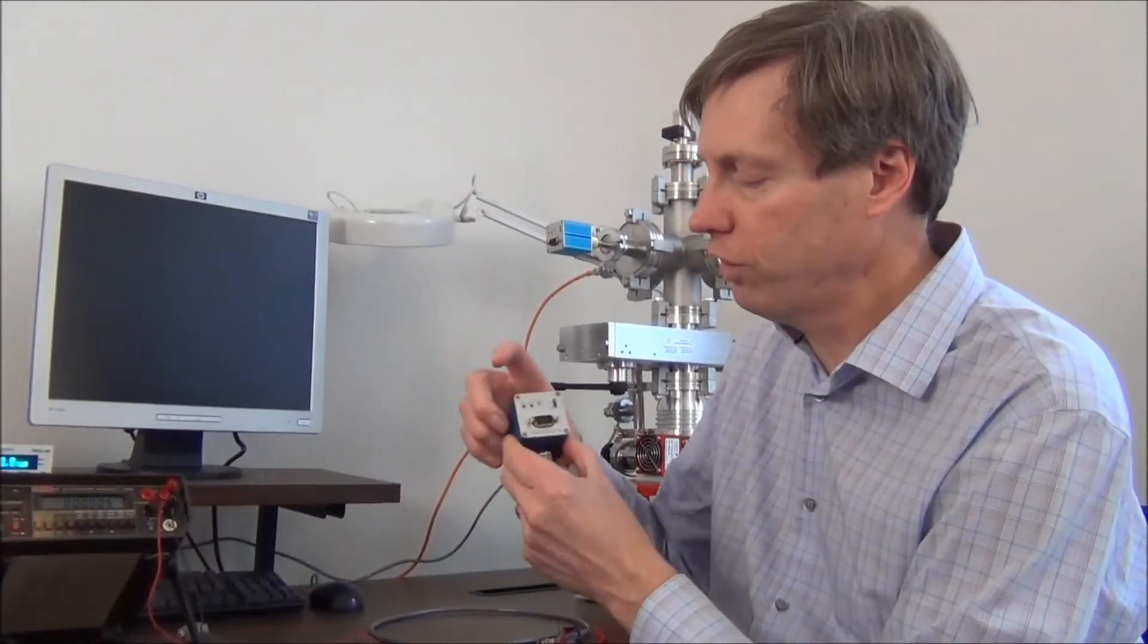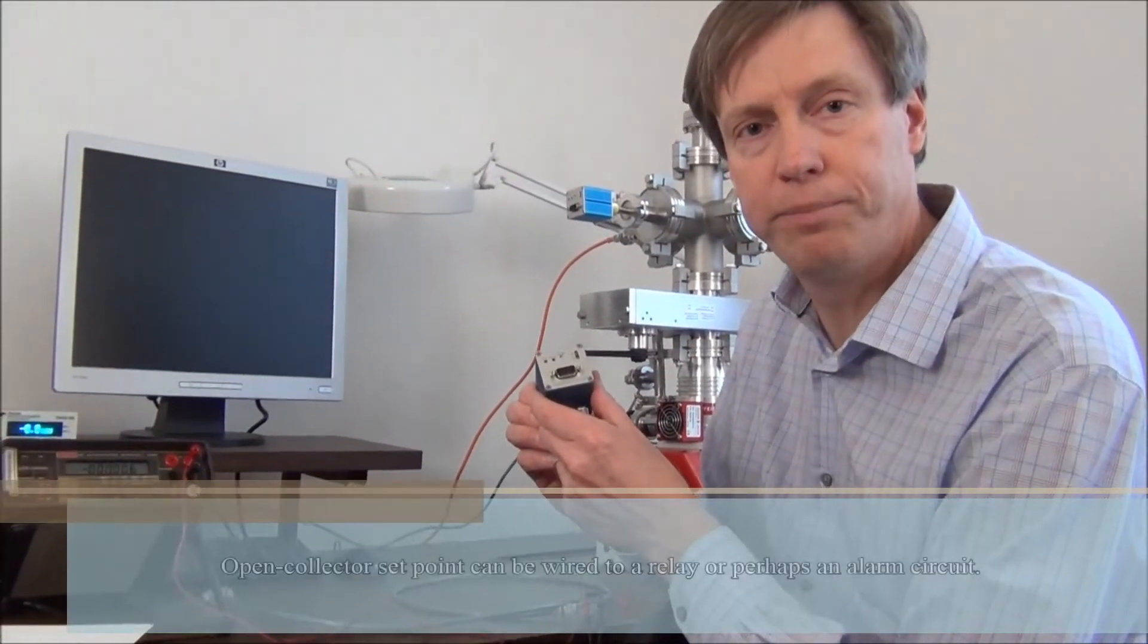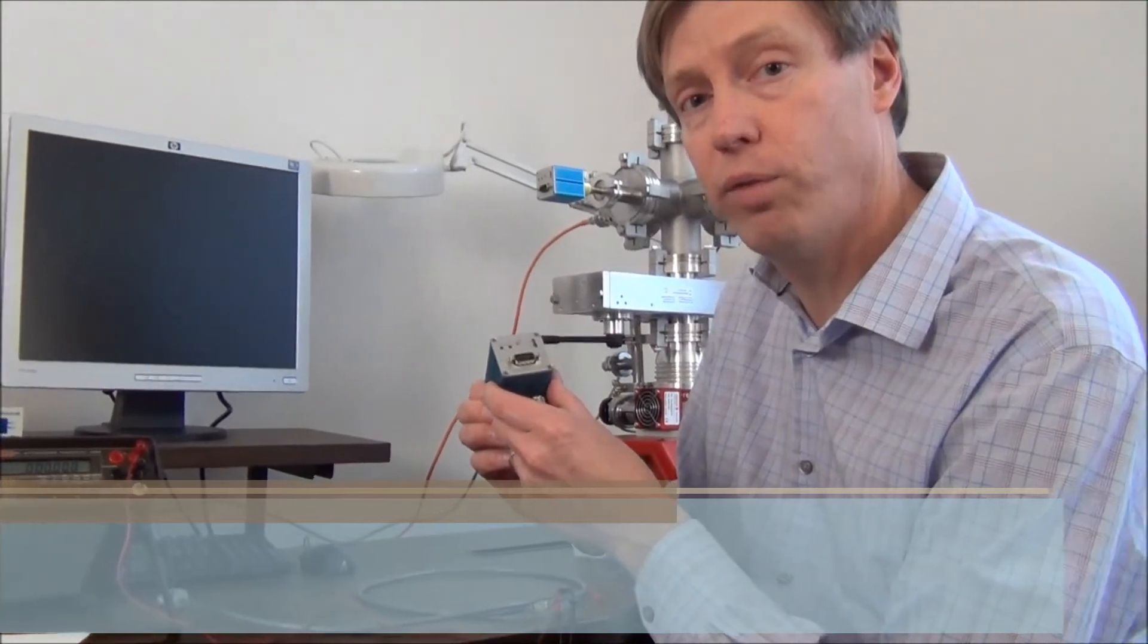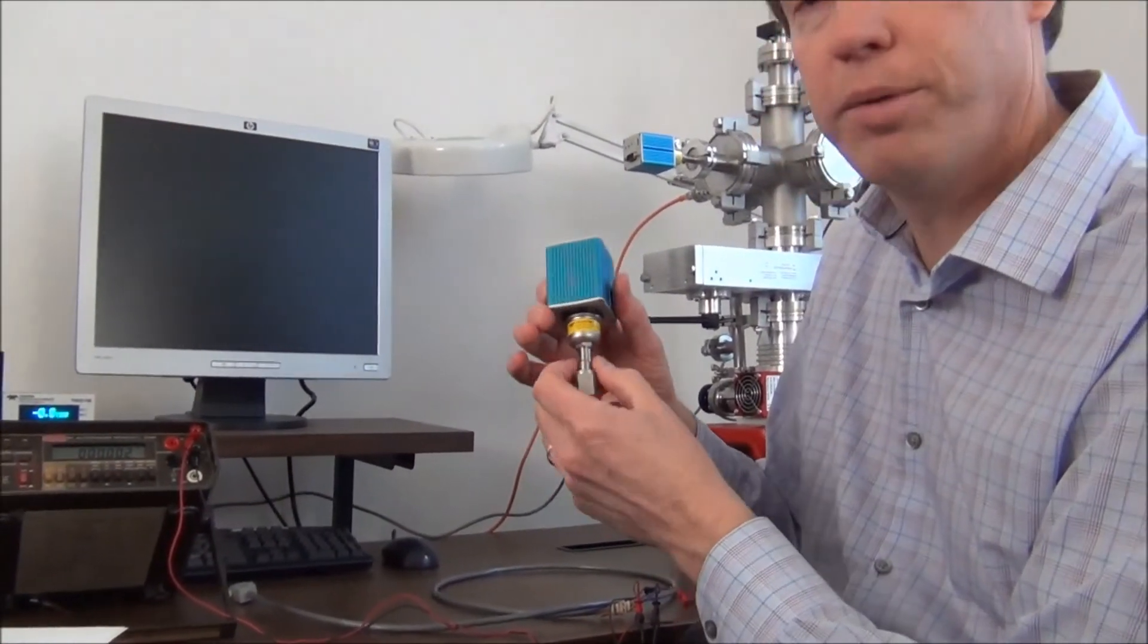The set point can be adjusted from right here. That's an open collector transistor type set point, and that's a real inexpensive way to get dependable for-line monitoring using the DAVC thermocouple gauge tube.